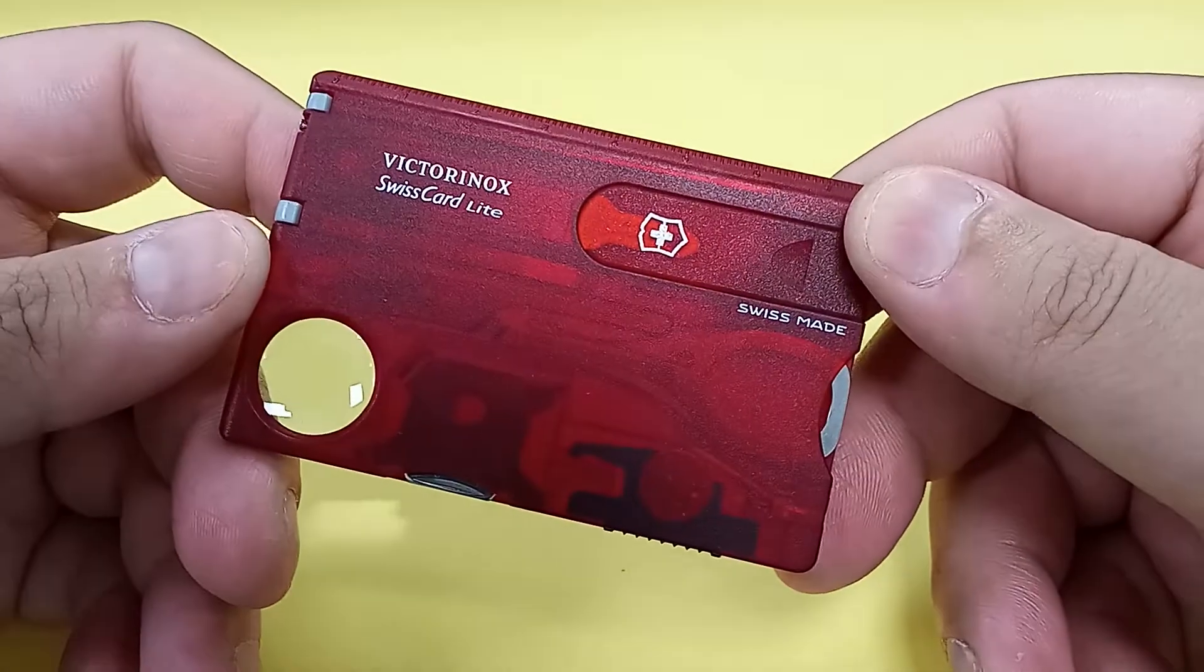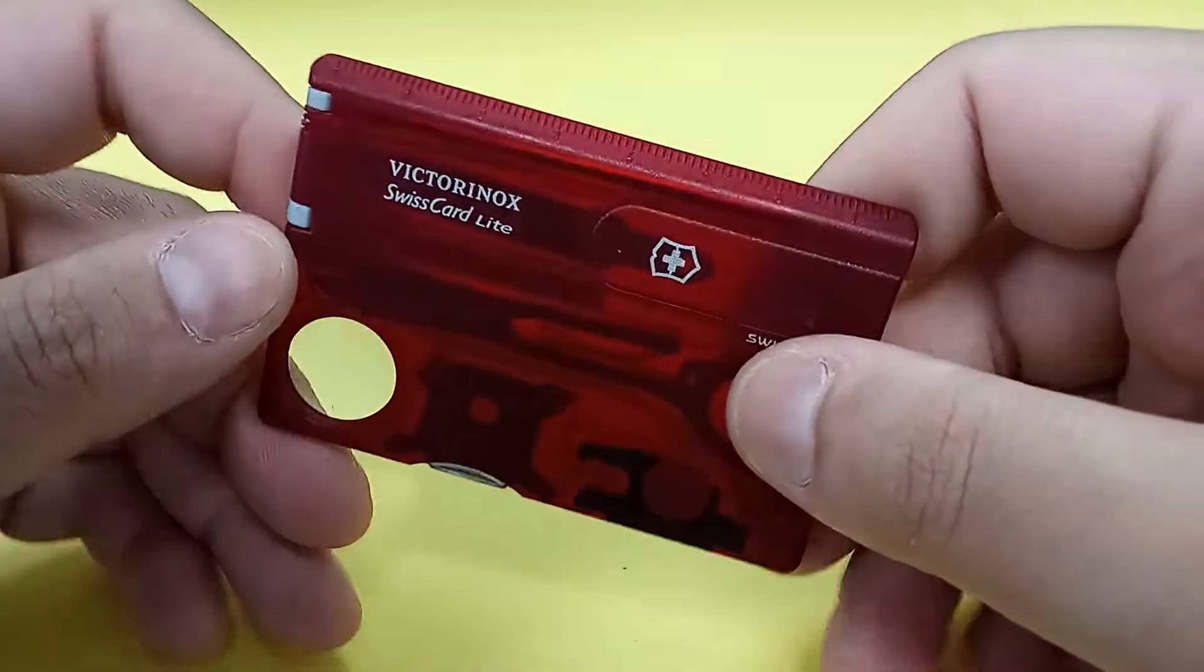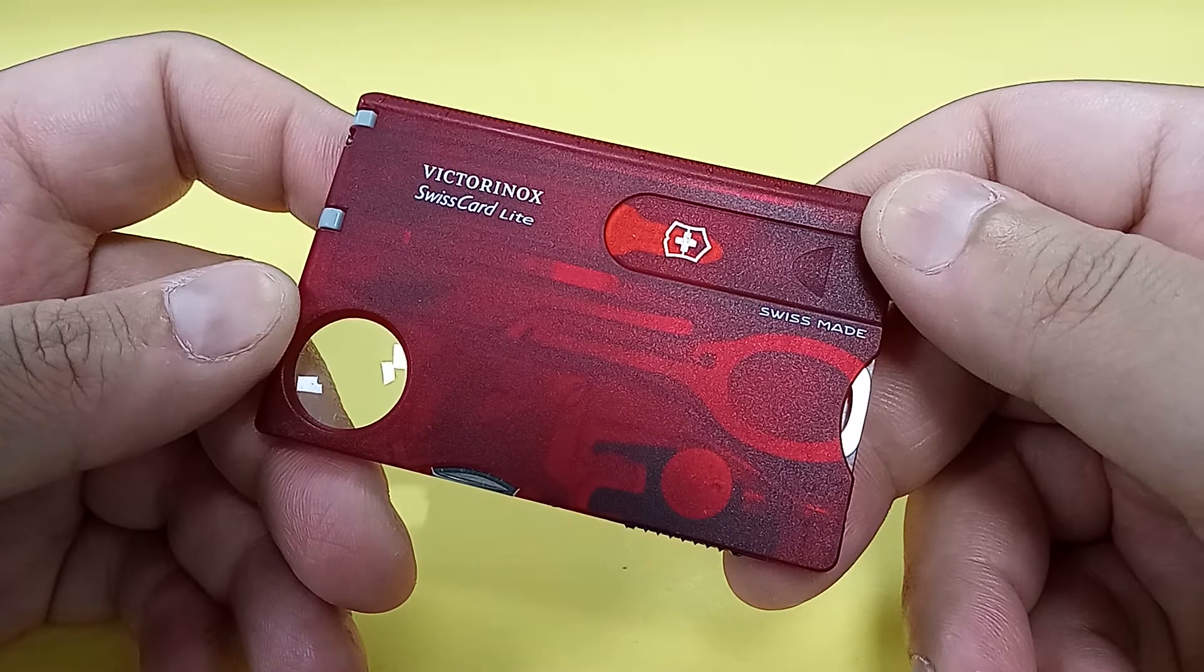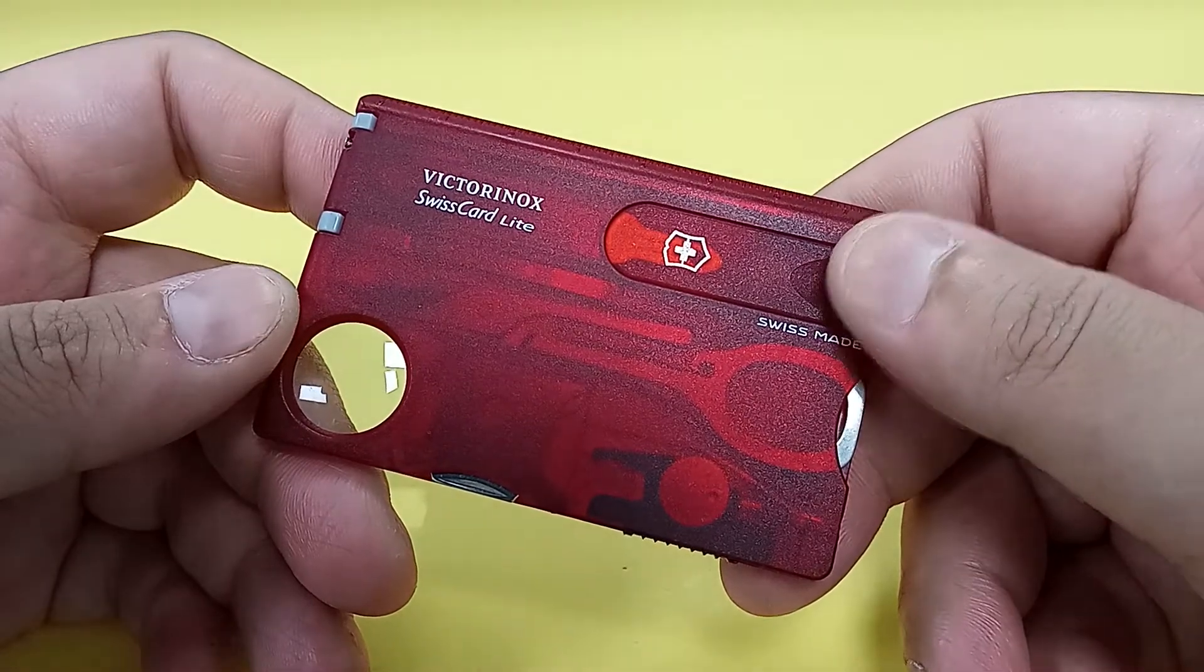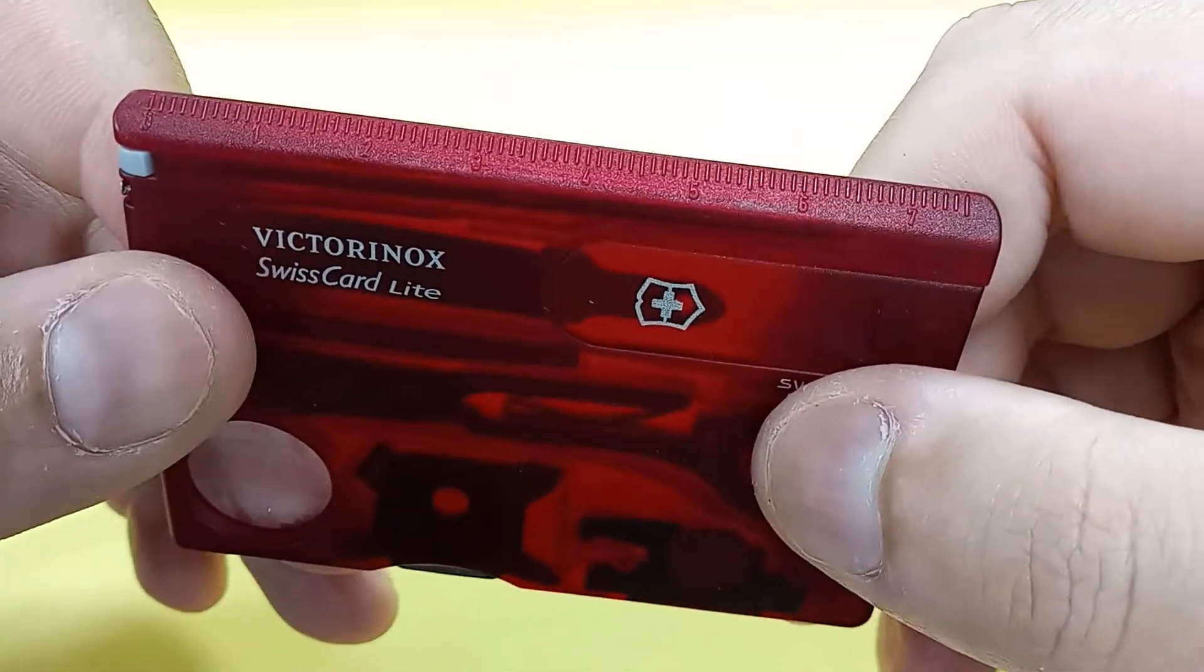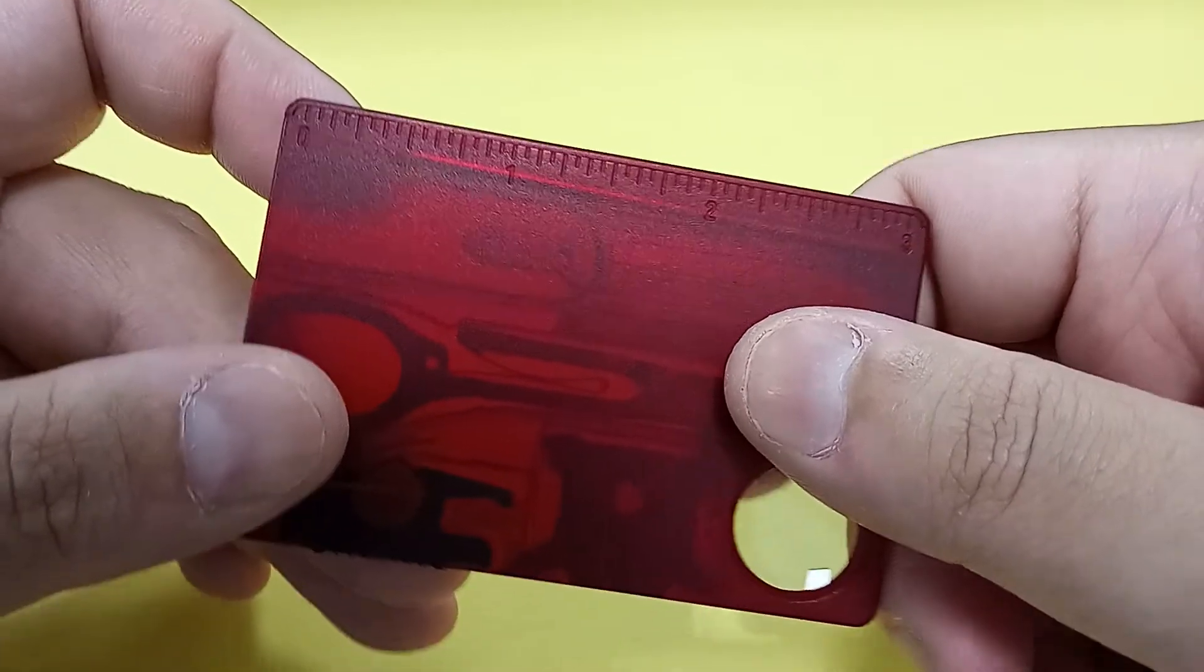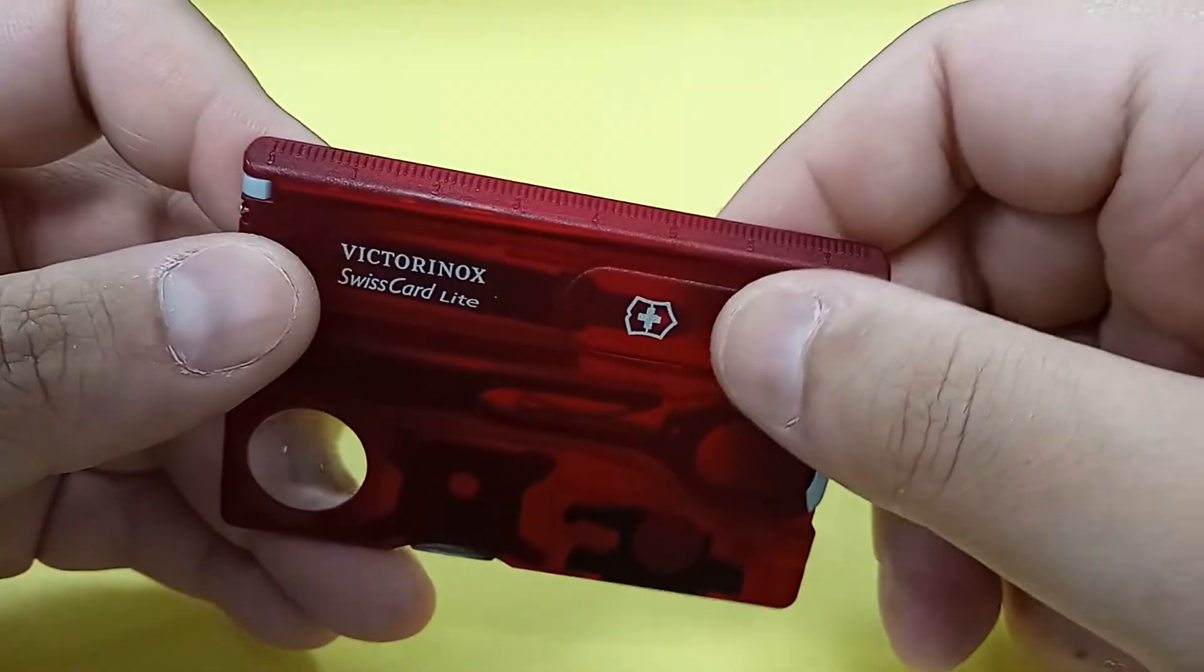Now one of the things I don't like is that Victorinox claims that this credit card sized tool has 13 functions. But there's a little bit of BS in that claim and you'll see why as I progress. On top you have a ruler, centimeters and inches. The numbers are a little difficult to see. It works as a ruler, not completely ideal though.